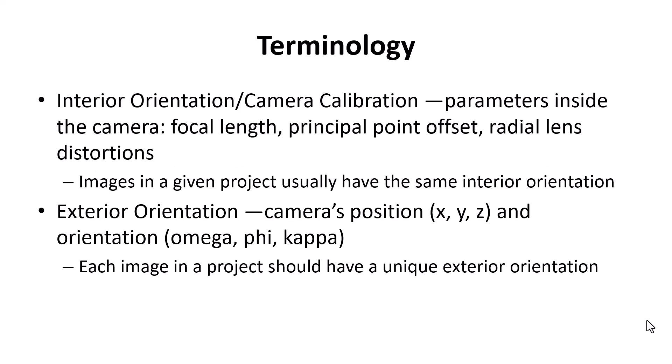First, some terminology. The interior orientation is sometimes called the camera calibration, and it includes parameters that are inside the camera, such as focal length, principal point offset, and radial lens distortions. Generally, in any given project, all images will have the same interior orientation parameters, largely because we're probably only using one camera and lens for that project.